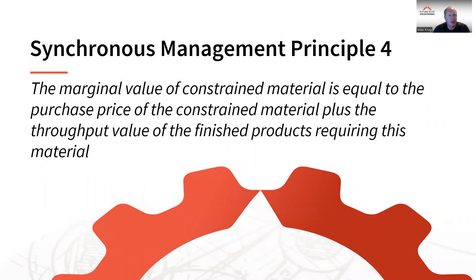In today's session we're going to continue on the concept of synchronous management and the next principle that we're going to discuss is principle number four, which talks about the marginal value of constrained material. If your organization has trouble getting materials from suppliers — which is common today with supply chain issues — and that constrained material is limiting your throughput, the marginal value of the constrained material equals the purchase price plus the throughput value of the finished product requiring this material.